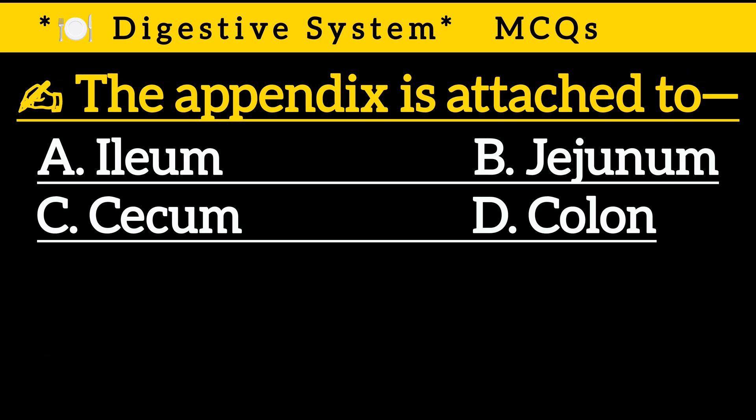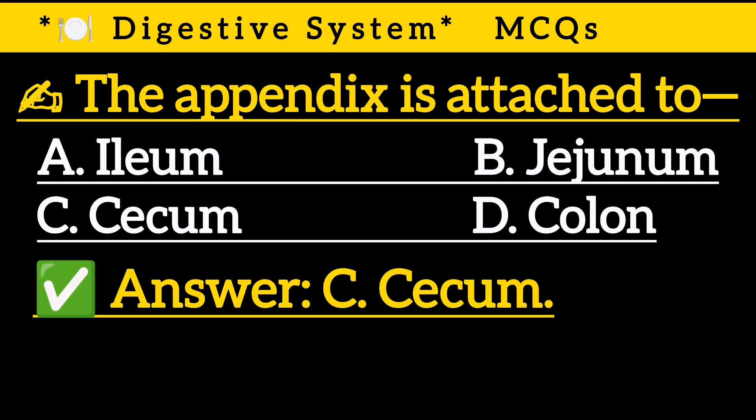Question 18: The appendix is attached to — Option A: Ileum, Option B: Jejunum, Option C: Cecum, Option D: Colon. Correct answer is Option C: Cecum.